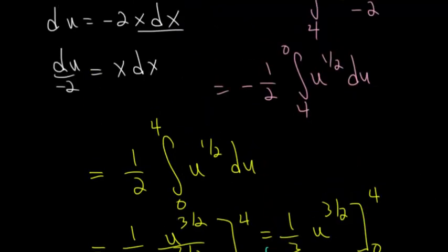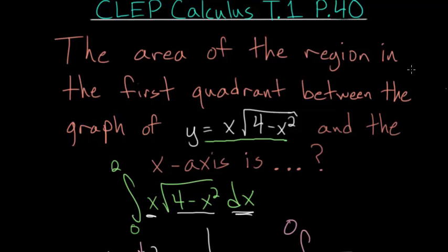So to answer the question that we started with, the area of the region in the first quadrant between this function and the x-axis is 8 thirds.